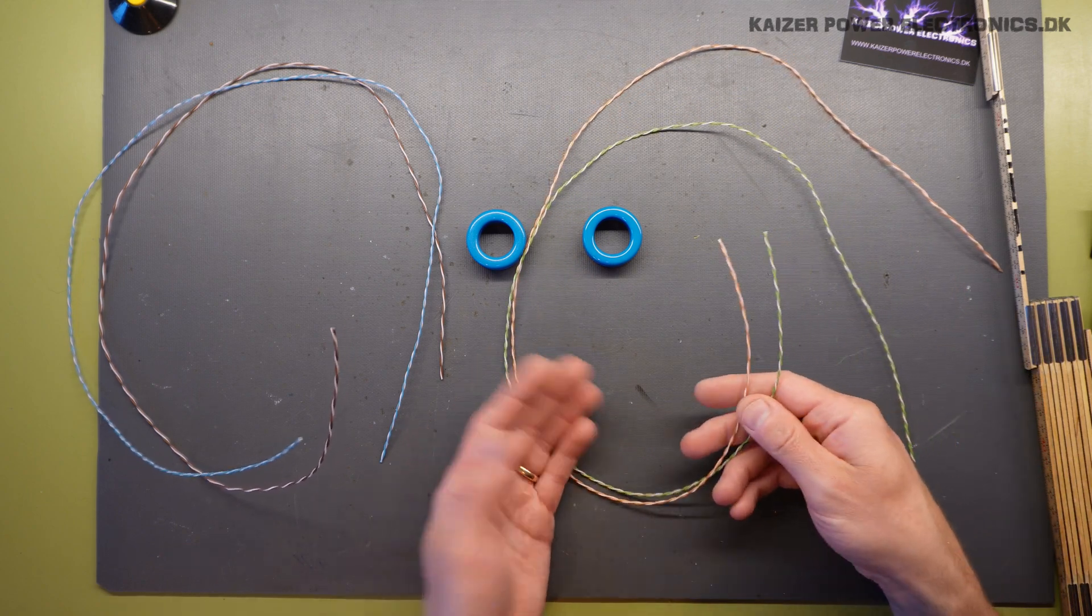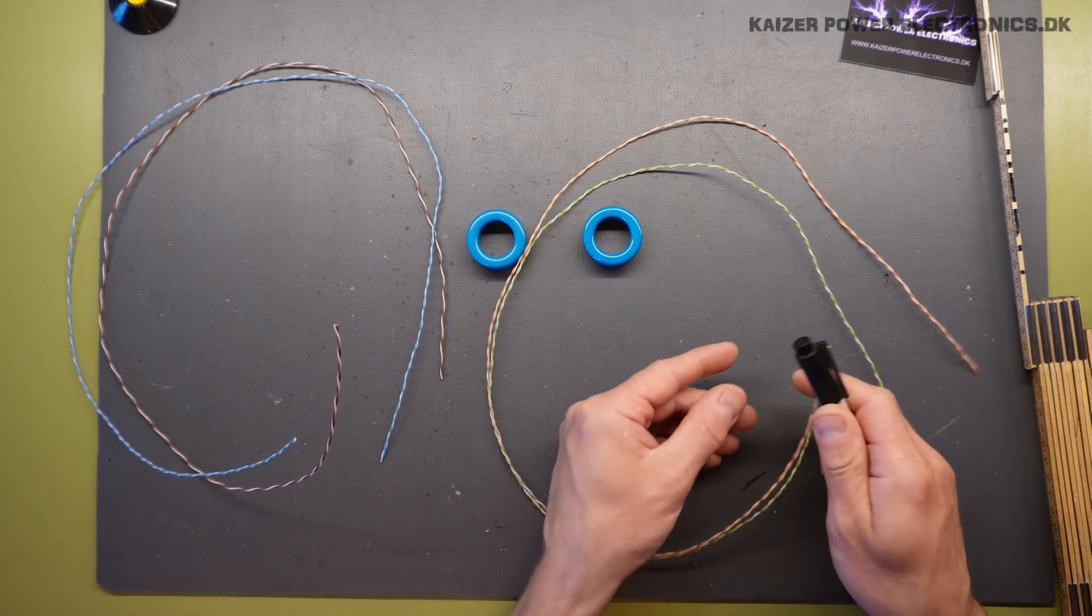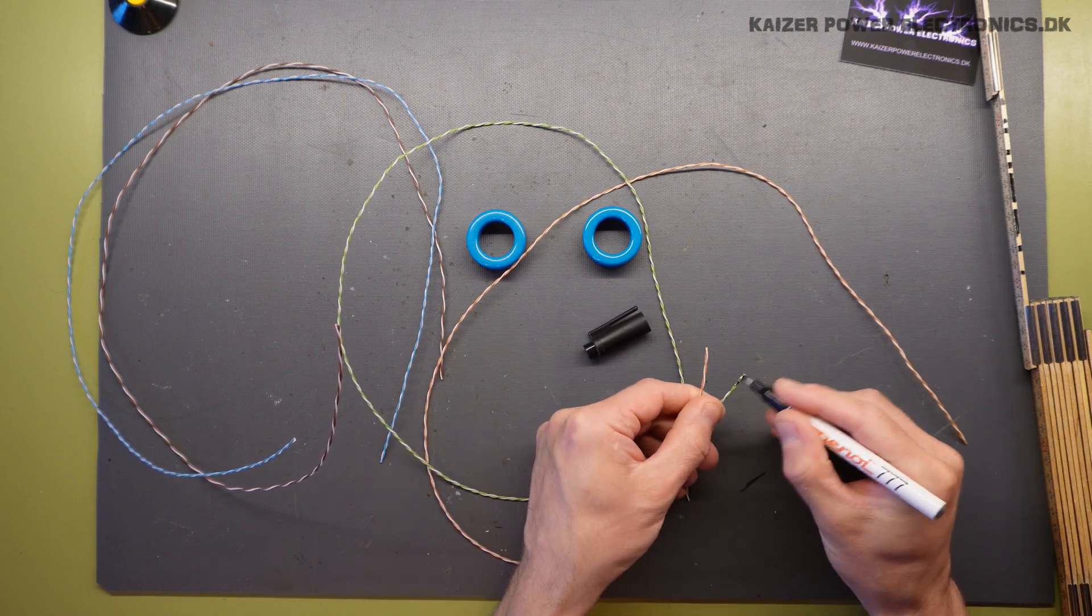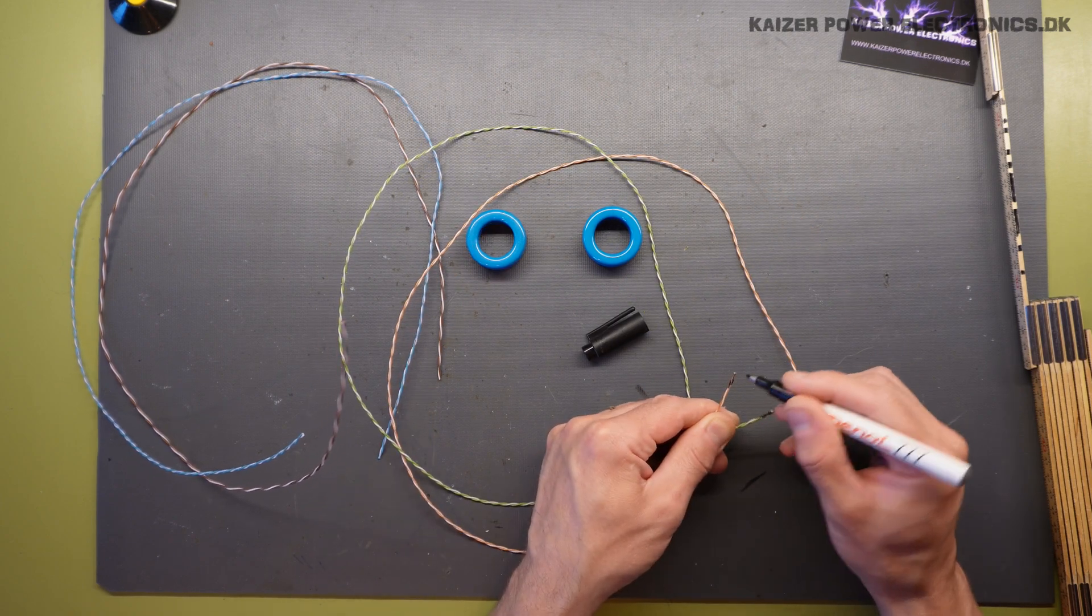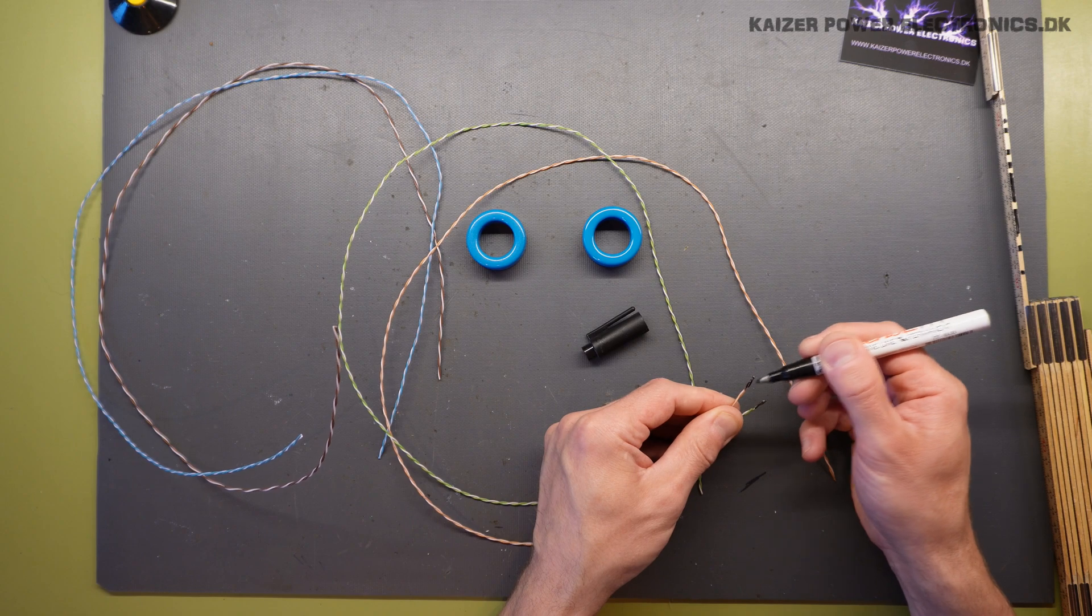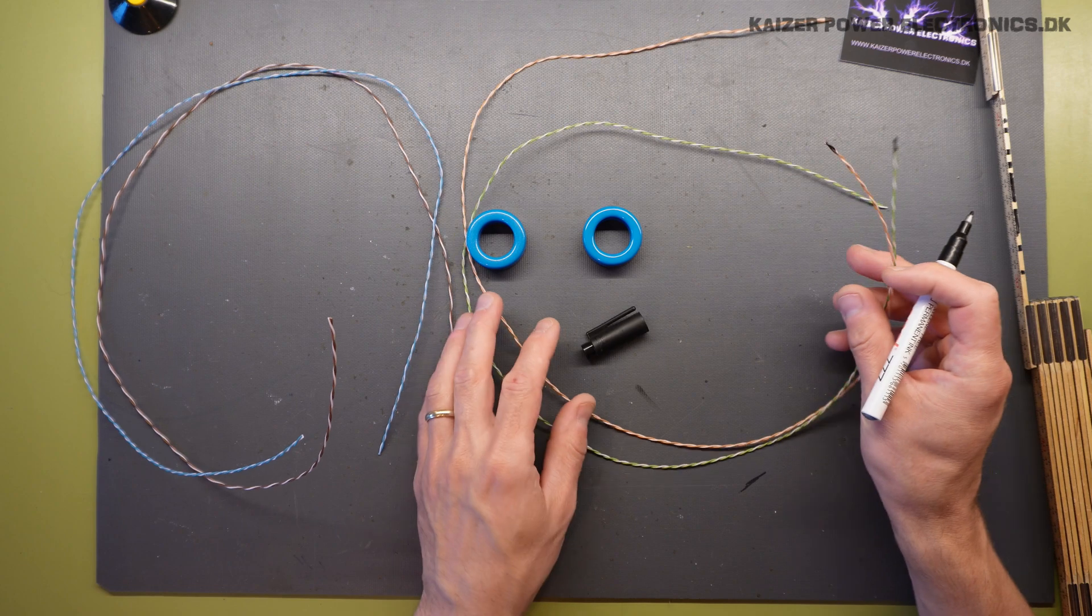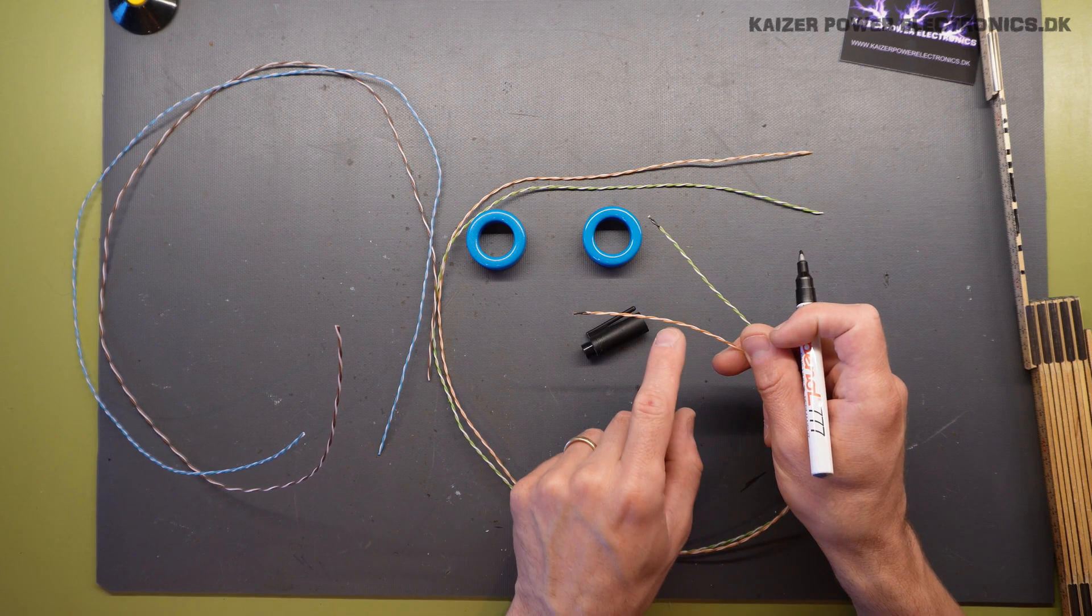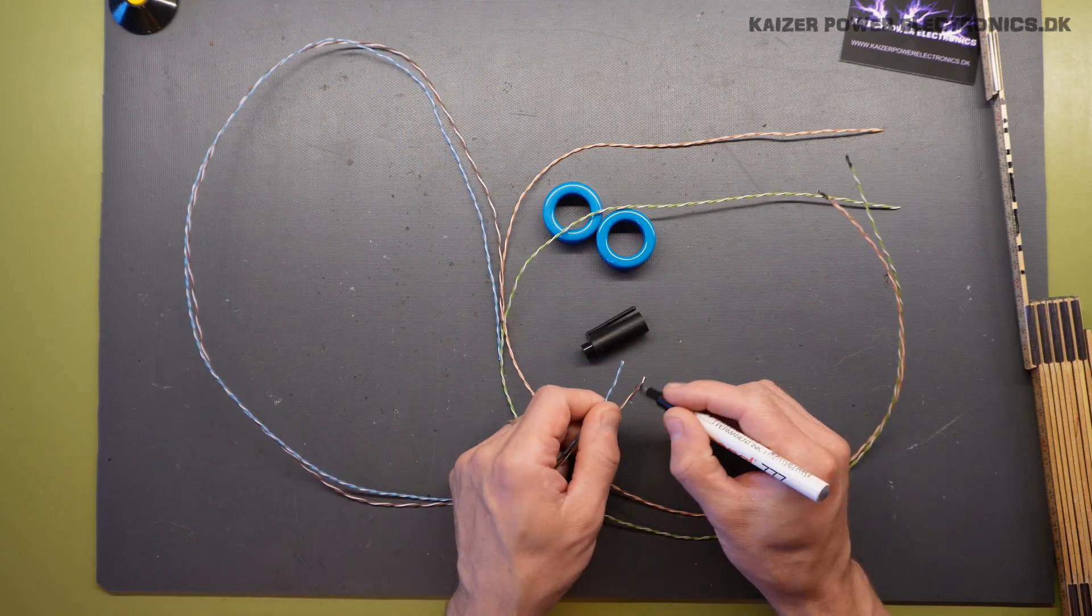Now one thing we do not want to mess up in a gate drive transformer is the facing. So in order to keep track of that we will just paint one end of the wires black. And by that we have marked the facing of our two primary, our two secondary windings and one primary winding. So it is the two white wires here that will become the primary winding. And each of the green and orange here will be each their secondary winding. And we'll do the same for the other pair here.